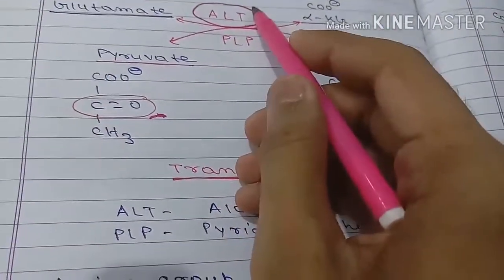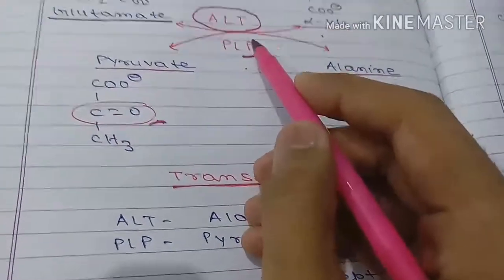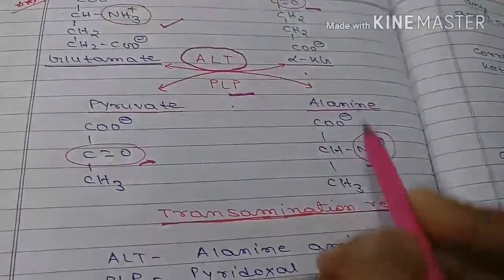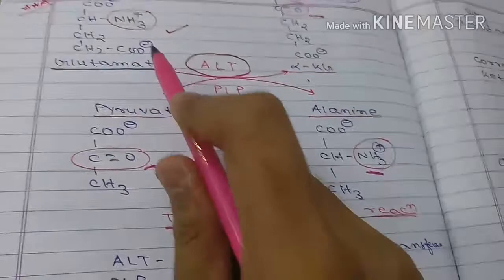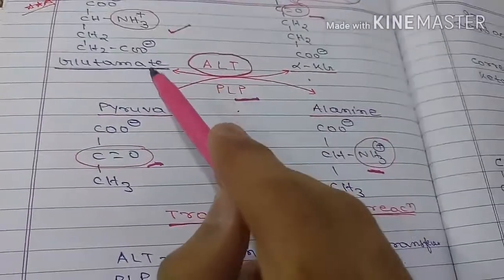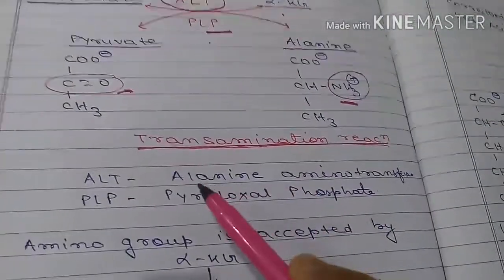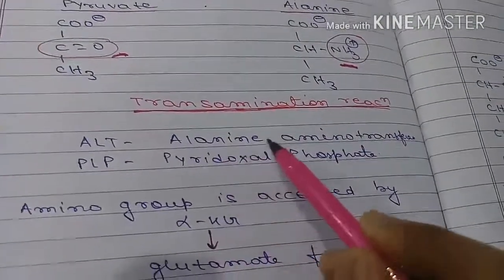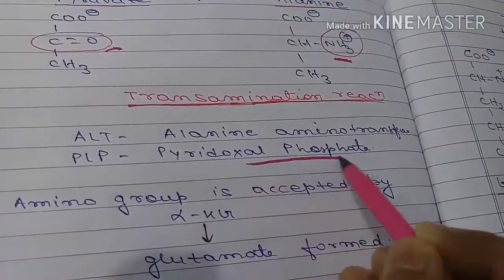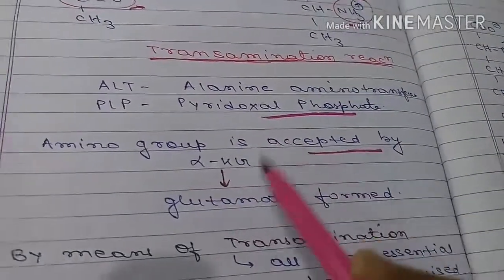The enzyme catalyzing this reaction is alanine aminotransferase (ALT). These enzymes require PLP (pyridoxal phosphate) as a prosthetic group. This is the transamination reaction — transfer of an amino group to a keto acid to form glutamate. The amino group is transferred to alpha-ketoglutarate, resulting in glutamate formation, and the enzyme involved is ALT, which requires PLP as its prosthetic group.